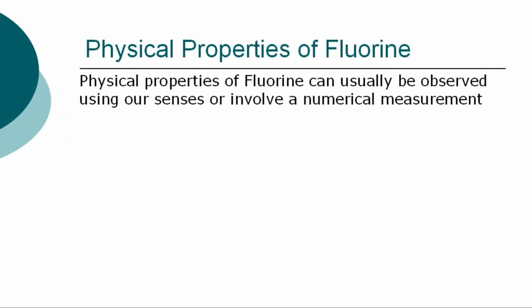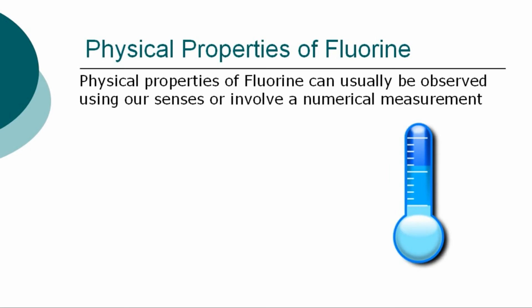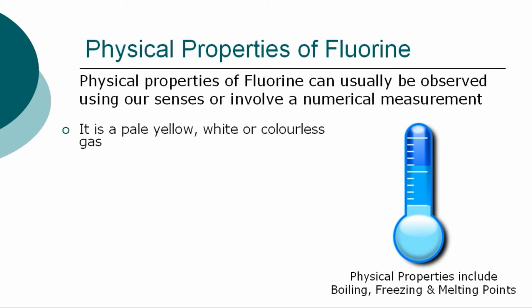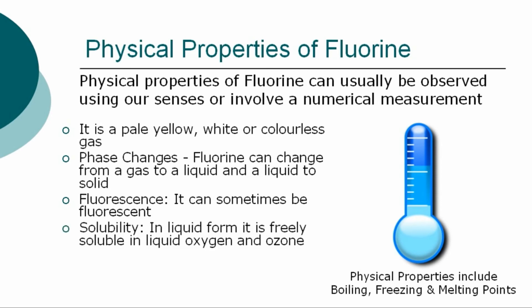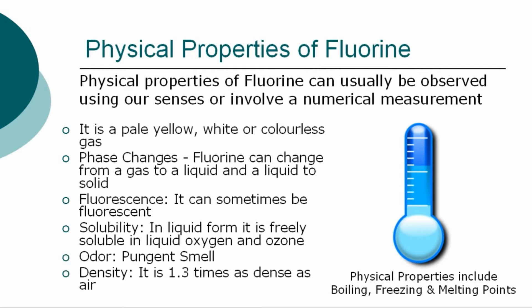The physical properties of fluorine can usually be observed using our senses or involve a numerical measurement, such as determining its boiling, freezing, and melting points. The physical properties of fluorine are: it is a pale, yellow, white, or colorless gas. It can change from a gas to a liquid and a liquid to a solid. It can sometimes be fluorescent. In liquid form, it is freely soluble in liquid oxygen and ozone. It has a pungent smell. Its density is 1.3 times that of air.